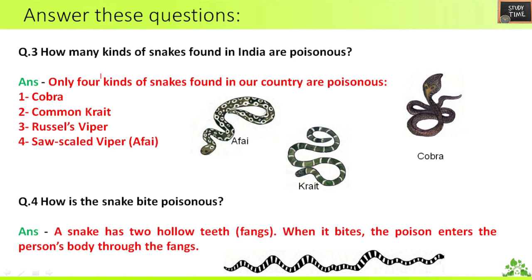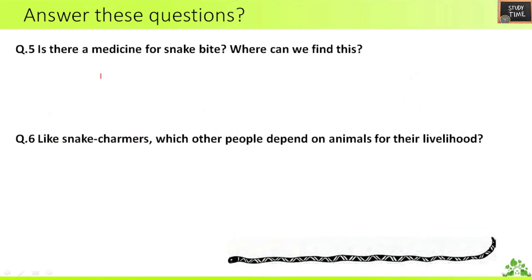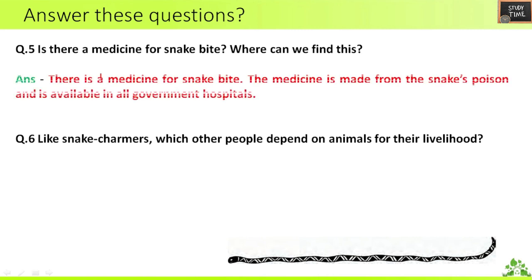Fourth question: how is a snake bite poisonous? A snake has two hollow teeth called fangs. When it bites, the poison enters the person's body through the fangs. Fifth question: is there a medicine for snake bite and where can we find it? Yes, there is a medicine for snake bite. The medicine is made from the snake's poison and is available in all government hospitals.